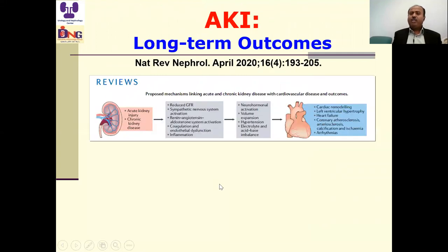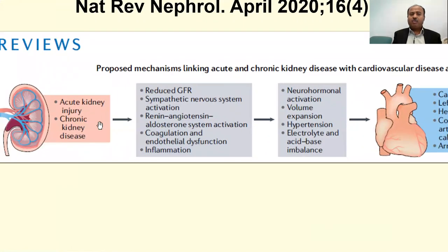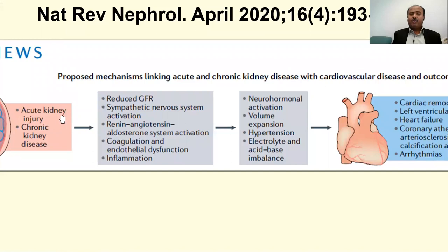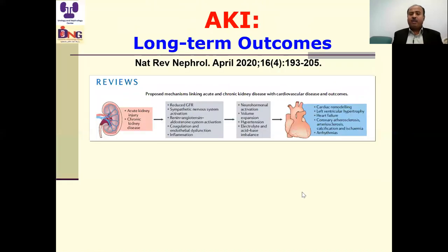What is the link between acute kidney injury and cardiovascular outcome? Acute kidney injury is associated with reduced glomerular filtration rate, sympathetic nervous system activation, renin-angiotensin-aldosterone system activation, coagulation and endothelial dysfunction, and inflammation. All these factors can lead to neurohormonal activation, volume expansion, hypertension, electrolyte and acid-base imbalances that ultimately lead to cardiac problems including heart failure and arrhythmias.